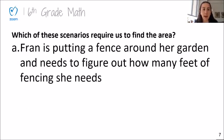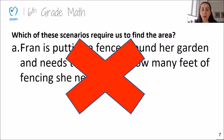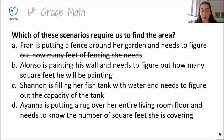The first scenario says, Fran is putting a fence around her garden and needs to figure out how many feet of fencing she needs. Now, the question I need to ask myself is, am I finding the area here or not? I see that Fran is putting a fence around her garden. That tells me that I need to measure the distance around the shape of her garden in order to find the fencing. I know the area is the amount of space inside of a two-dimensional figure. So, I know that this actually does not mean that I need to find the area. I actually need to find the perimeter here, and I find the perimeter by adding all the sides.